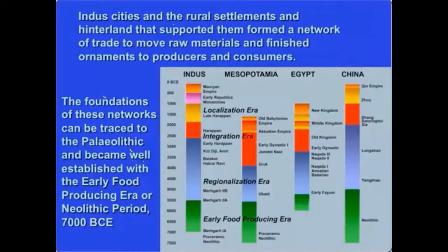The places where people used ornaments include cities and rural settlements, and the source areas for raw materials were found in the hinterland. These all form a network of trade that moves raw materials and finished ornaments to producers and consumers. The context of use of ornaments we'll be talking about focuses on places where people are congregating, interacting, and meeting each other — the cities and rural settlements of the Indus.